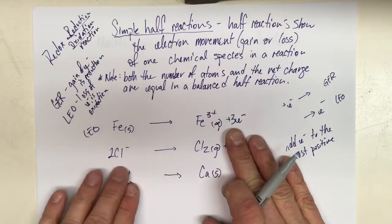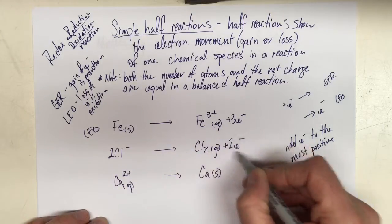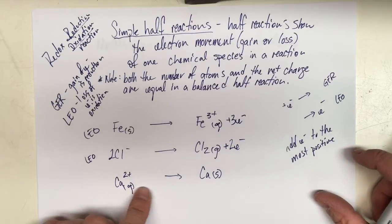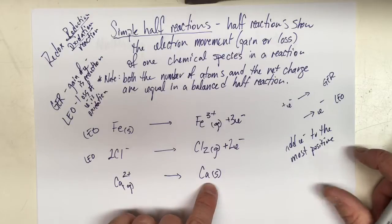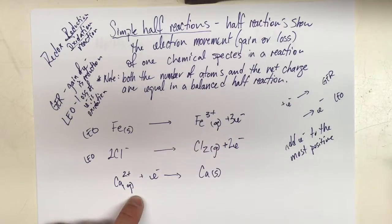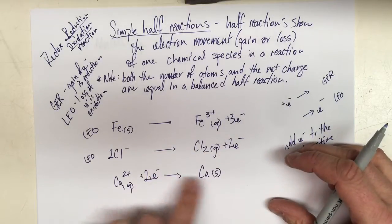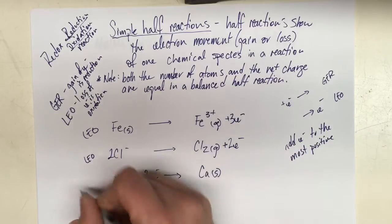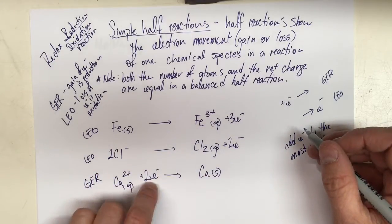Keep in mind that two negative is not as positive as zero. Since the electrons are a product, the chloride ions are losing electrons and are oxidized. My last example has calcium ions becoming calcium solid. We have two positive on one side and zero charge on the other. I add electrons to the side that's more positive — the side with two positives — putting two electrons there, so two positive and two negative equals zero. In this case the electrons are a reactant, so the calciums are gaining electrons and they are reduced.